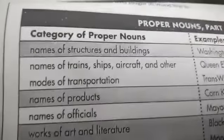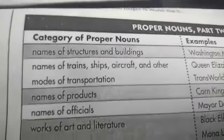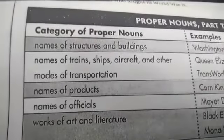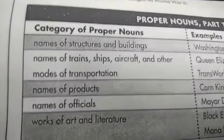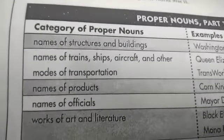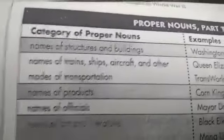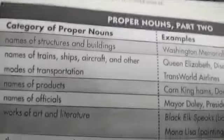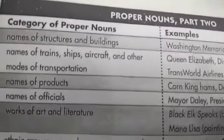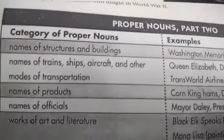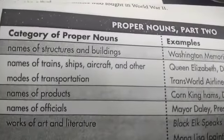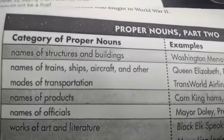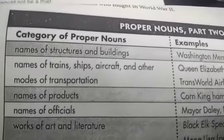Names of structures and buildings — the first letter of each word is capitalized. For instance, Washington Memorial: W and M are capitalized.